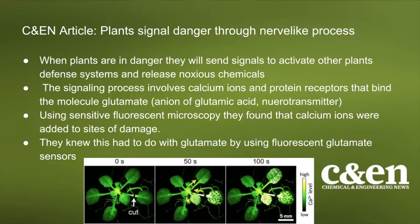Looking at the pictures on the slide: at zero seconds a cut was made. At 50 seconds you can see the calcium ions rushing to the damaged site but also to the leaf on the left. At 100 seconds the damaged leaf is totally covered in calcium ions and the defense systems of the leaf on the left have already been activated. Using sensitive fluorescent microscopy they found calcium ions at sites of damage, and they confirmed the role of glutamate using fluorescent glutamate sensors.